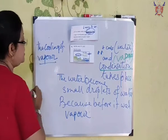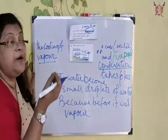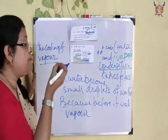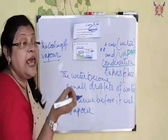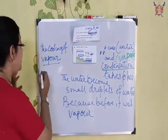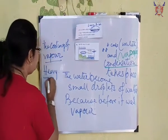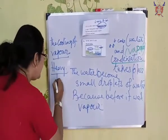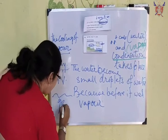The cooling of vapour is condensation. The vapour, that is the steam, becomes small droplets of water and it becomes heavy. As it becomes cool, it becomes heavy, and it drops on the ground.